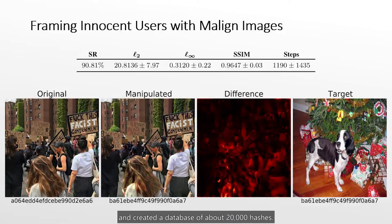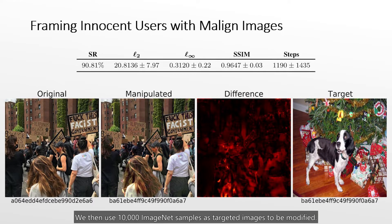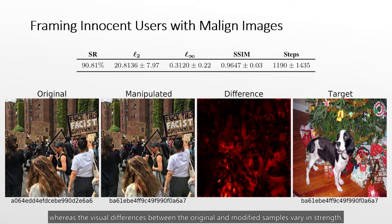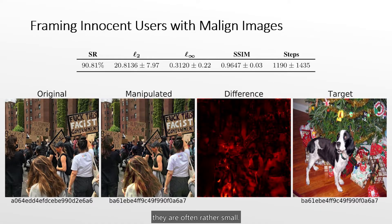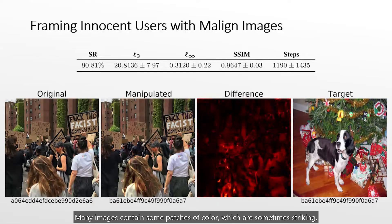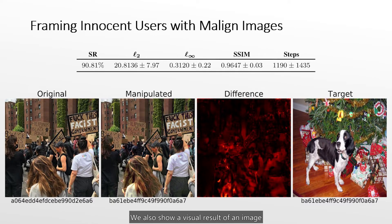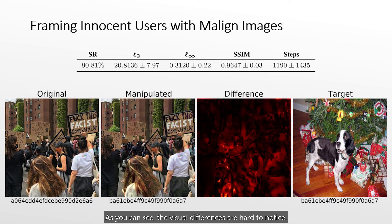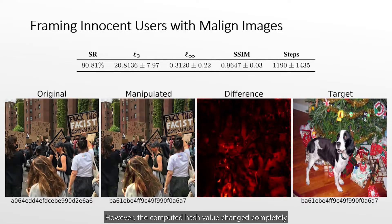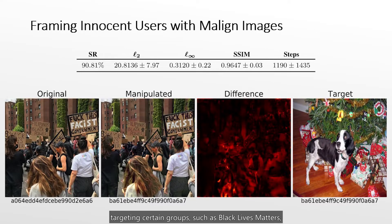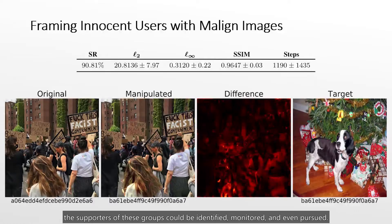In our evaluation, we used stock images as a surrogate for CSAM and created a database of about 20,000 hashes, then used 10,000 image samples as targets to be modified. Our attack successfully created hash collisions in over 90% of all cases, with visual differences often hardly noticeable — many images contain some color patches that are sometimes striking but often subtle. We show a visual result using a Black Lives Matter protest image as input and a random dog image for the target hash. The visual differences are hard to notice — for example, a color patch on a shirt — yet the computed hash changed completely to match the unrelated dog image. In a real attack, distributing modified images over social media targeting certain groups could allow supporters to be identified, monitored, and pursued — a setting not necessarily far-fetched in states of injustice.